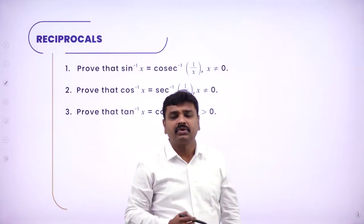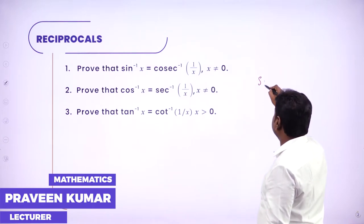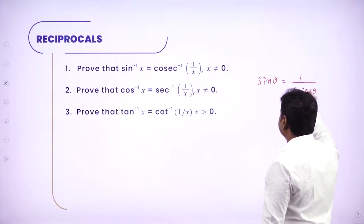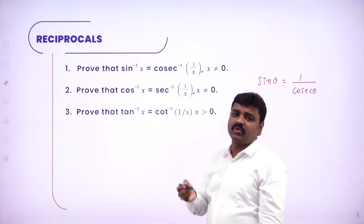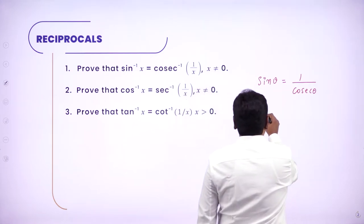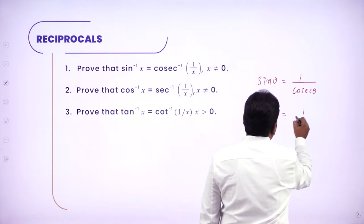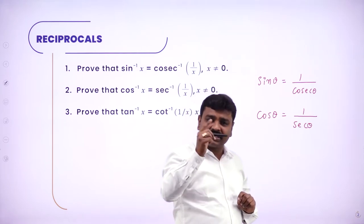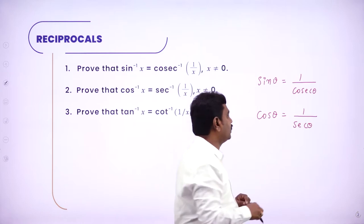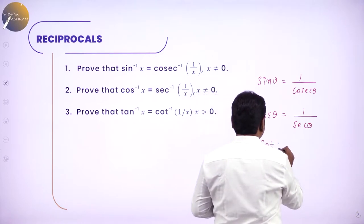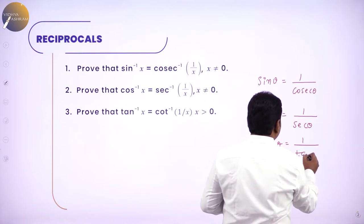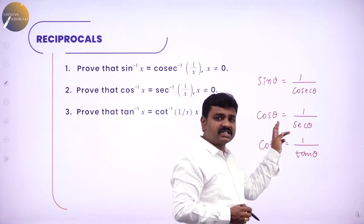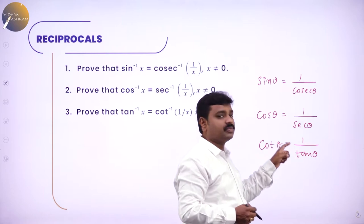Reciprocals. All of you know the reciprocal of sin theta is cosecant theta. So sin theta can be written as 1 by cosecant theta, or cosecant theta can be written as 1 by sin theta. Reciprocal of cos theta is secant theta — secant can be written as 1 by cos or cos as 1 by secant. Reciprocal of tan is cot: cot theta equals 1 by tan theta, and vice versa. So for sin the reciprocal is cosecant, for cos it is secant, and for cot it is tan.